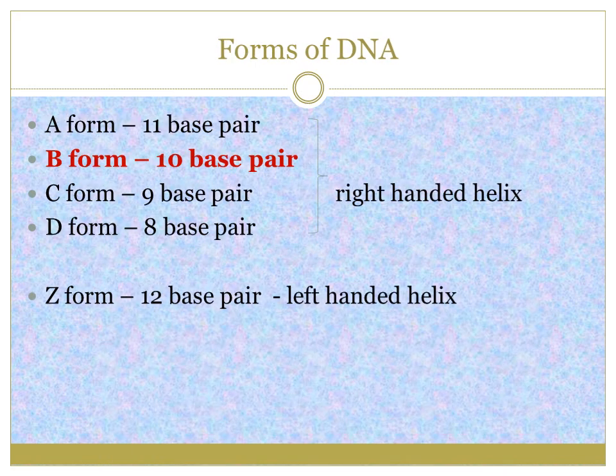Forms of DNA — DNA is divided into five different forms based on the base pairs in each turn: A, B, C, D, and Z forms. A, B, C, and D are right-handed helix, whereas the Z form has a left-handed helix. A-form has 11 base pairs, B-form has 10, C-form has 9, D-form has 8, and Z-form has 12 base pairs per turn. Watson and Crick proposed the B-form, which has 10 base pairs per turn.